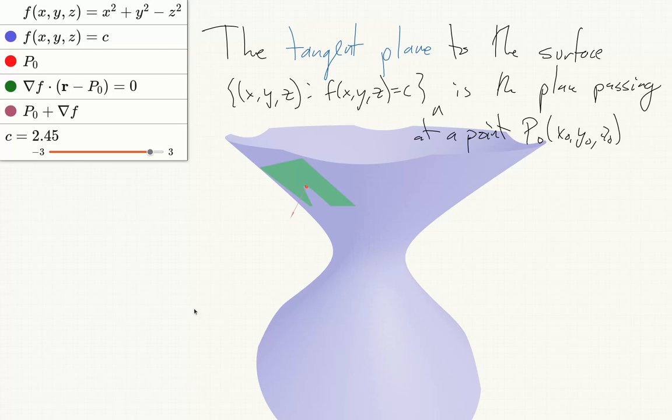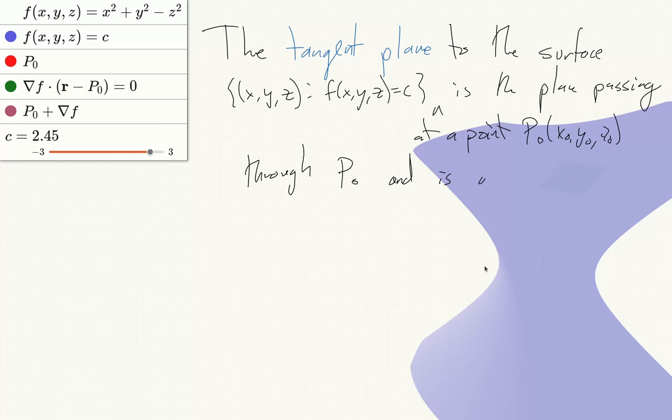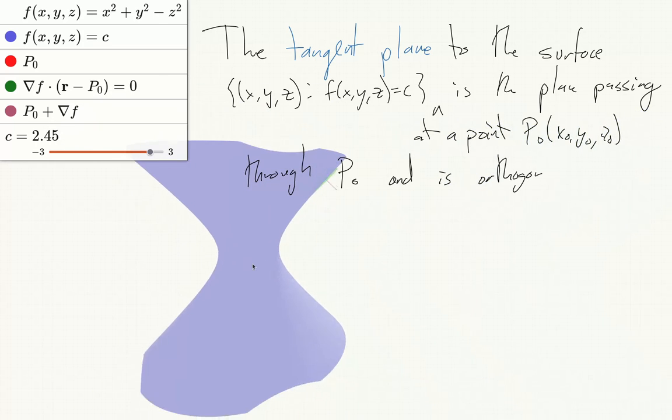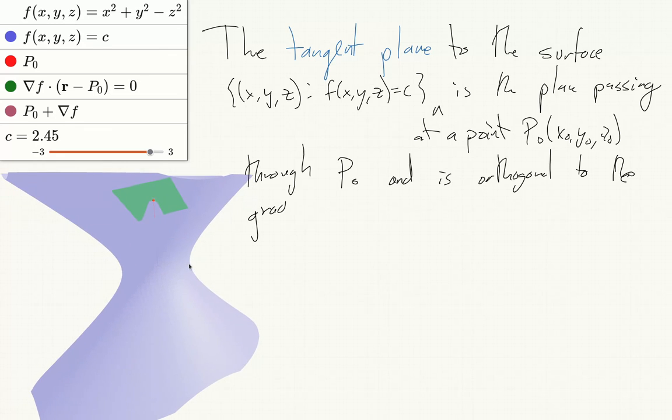is the plane that passes through p0 and is orthogonal to the gradient of f at that point, or in the notation we've introduced, del f at p0.